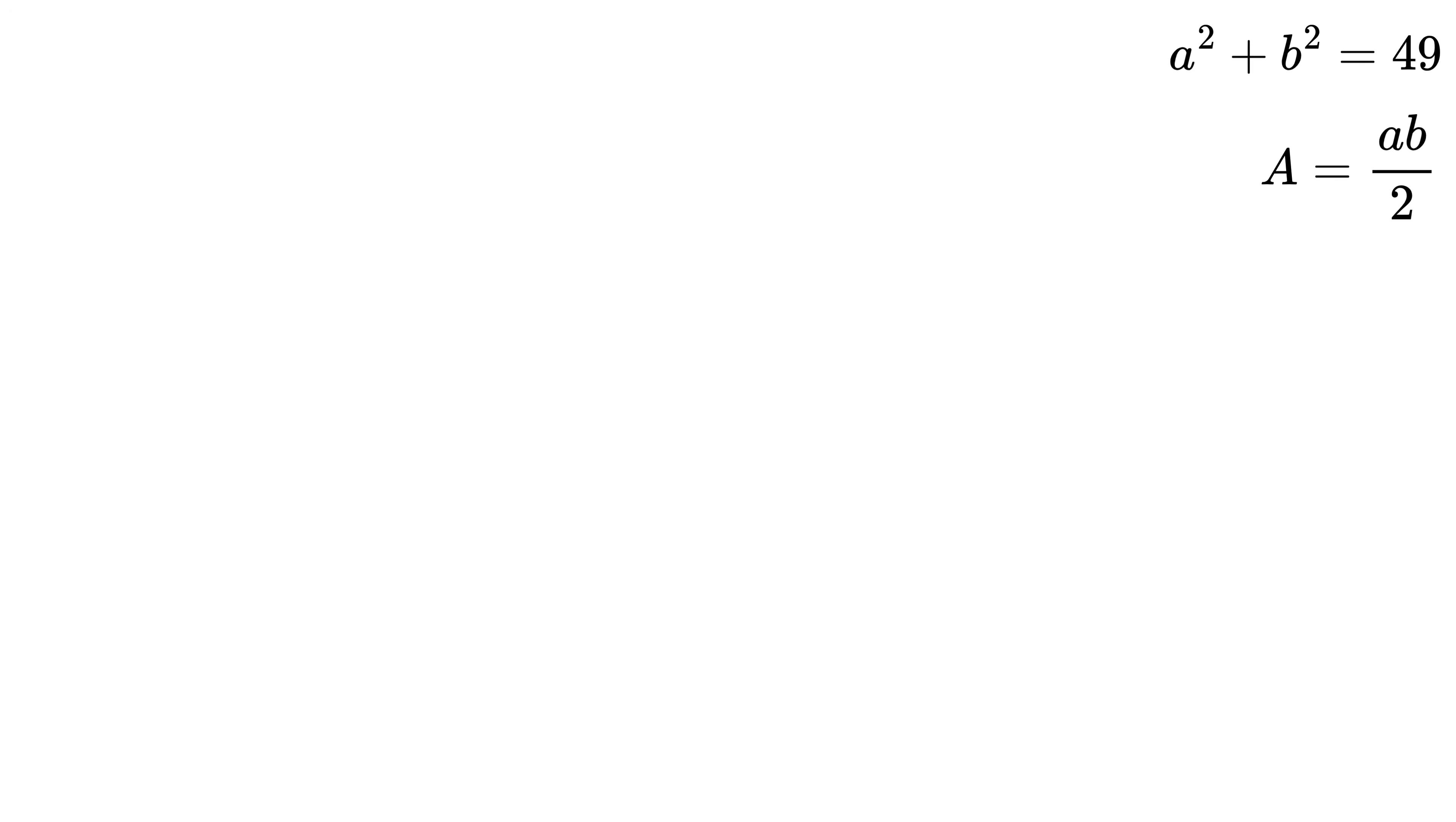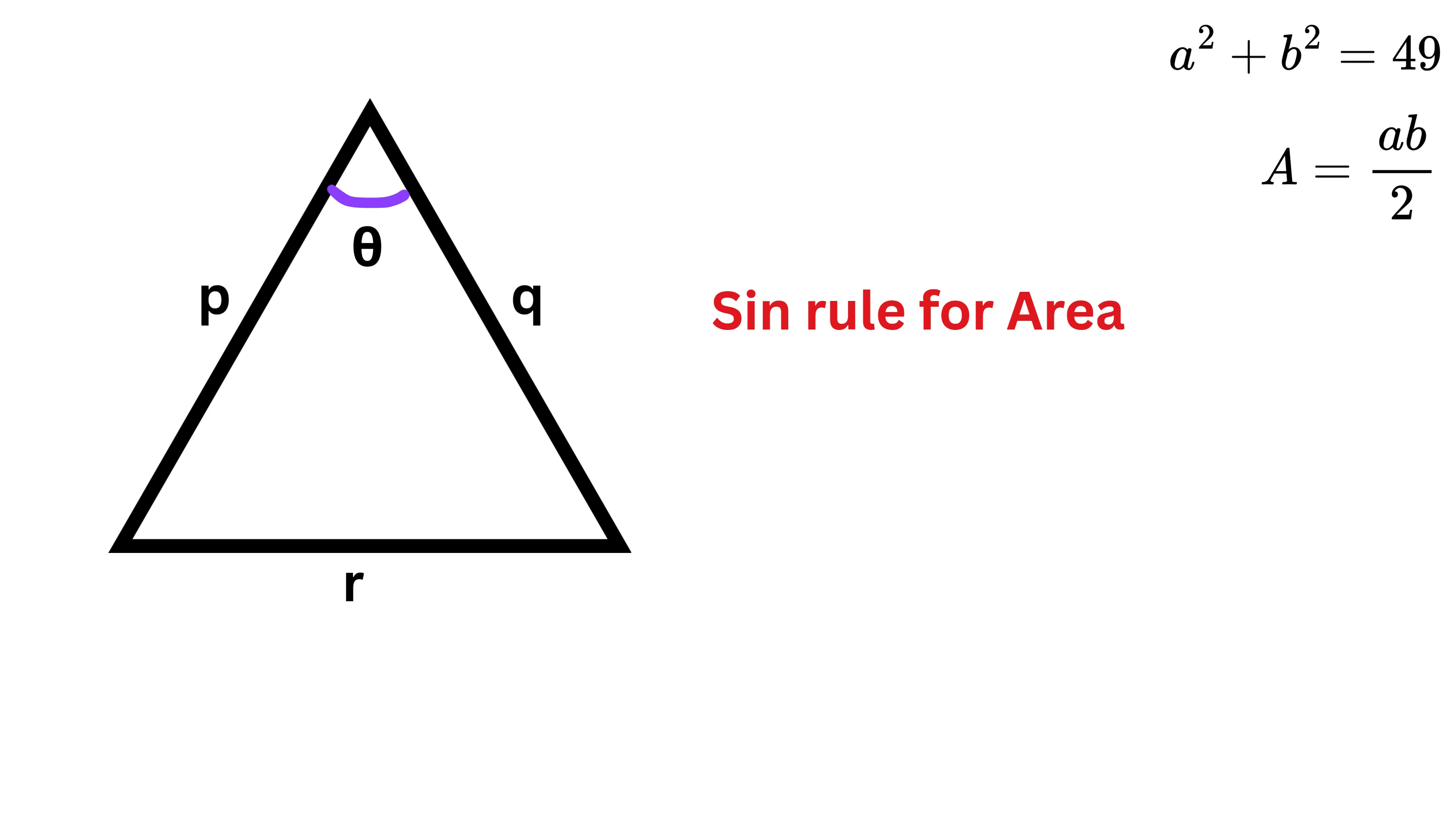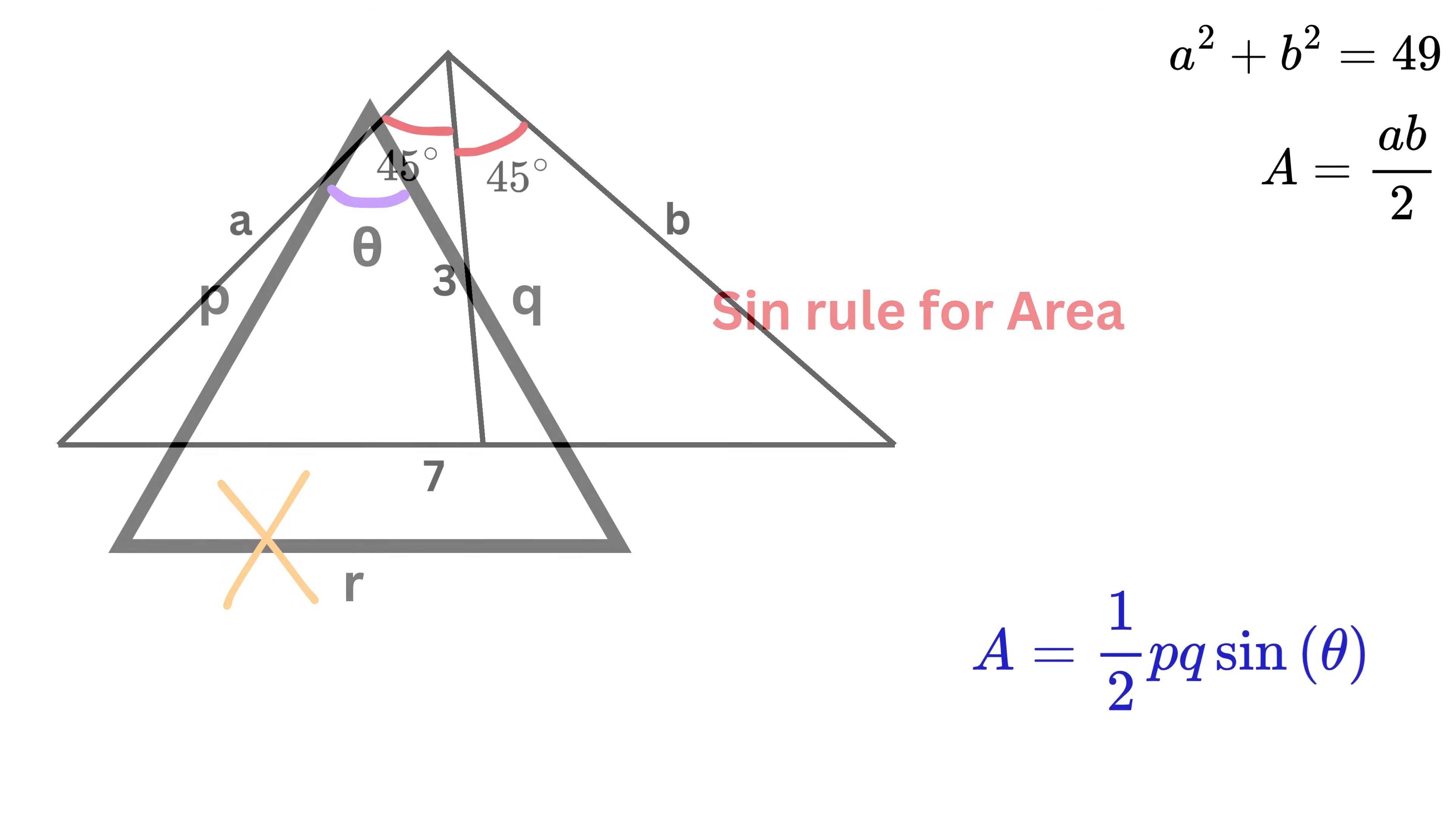Now here comes the magic. If a triangle has side lengths P, Q, and R, and if this angle is theta, then there is a rule called sine rule for the area of a triangle, which says that the area of this triangle will be equal to half times P times Q times sine of the angle theta. Note that you don't even need all three sides in order to find the area. You just need two sides and the included angle.